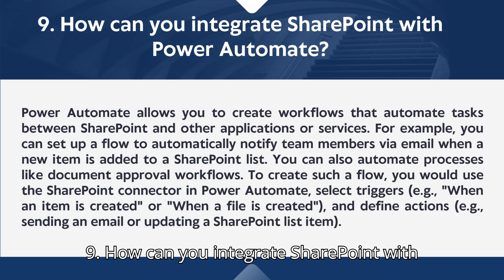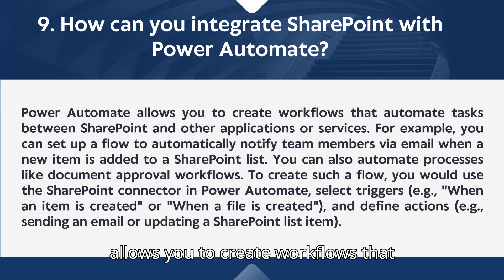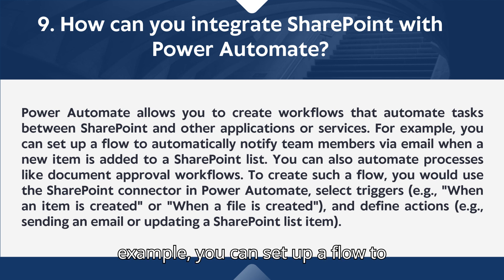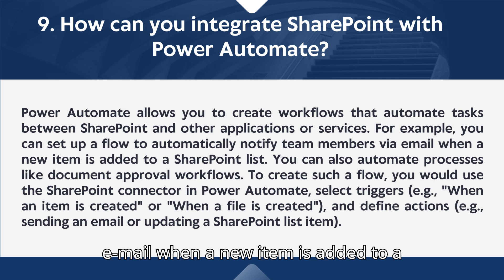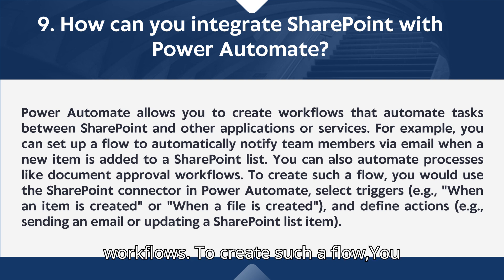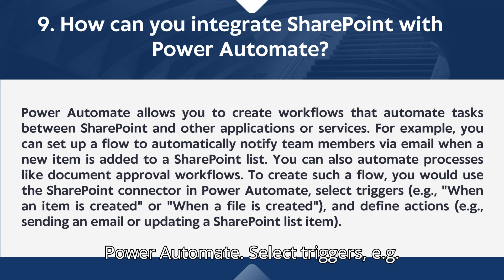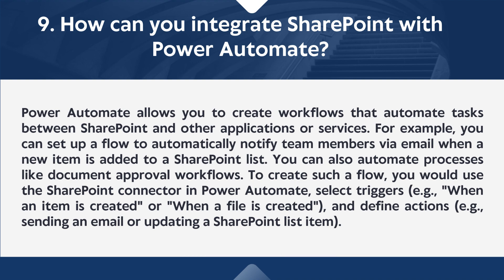Question nine: How can you integrate SharePoint with Power Automate? Power Automate allows you to create workflows that automate tasks between SharePoint and other applications or services. For example, you can set up a flow to automatically notify team members via email when a new item is added to a SharePoint list. You can also automate processes like document approval workflows. To create such a flow, you would use the SharePoint connector in Power Automate, select triggers — e.g., when an item is created or when a file is created — and define actions, e.g., sending an email or updating a SharePoint list item.